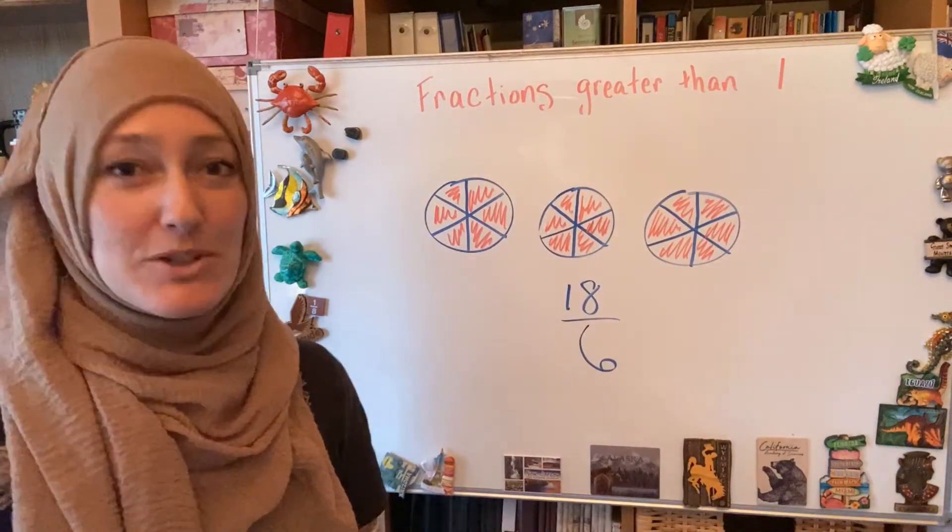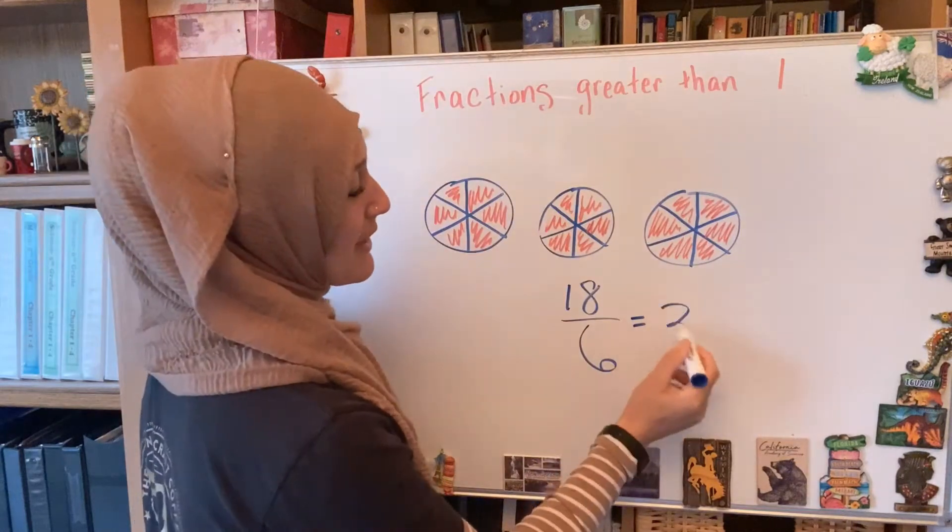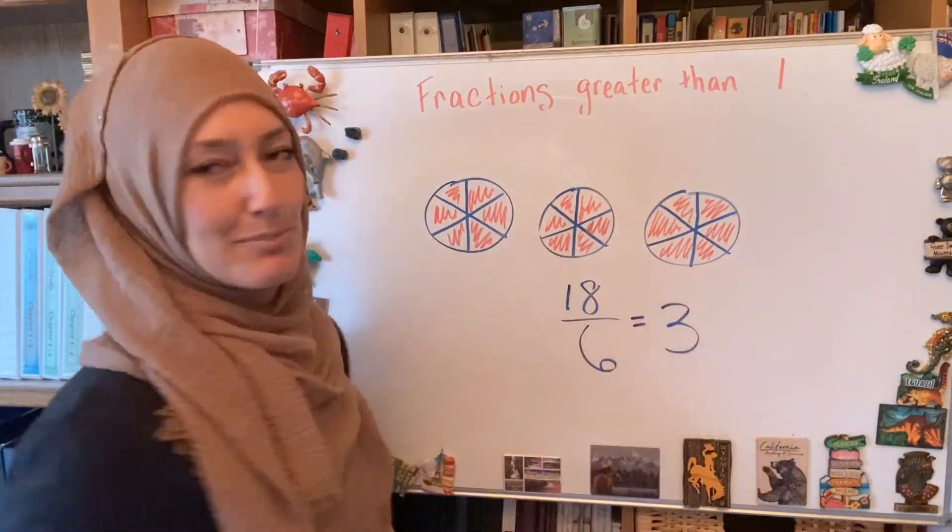Then the rest of it is kind of easy. We just think of division. 18 divided by 6 will be 3, and that is my 3 wholes.